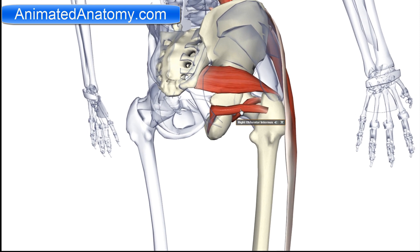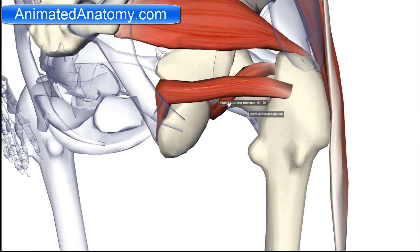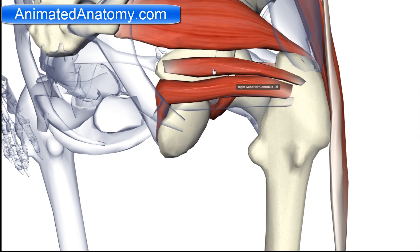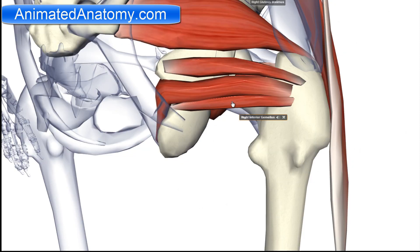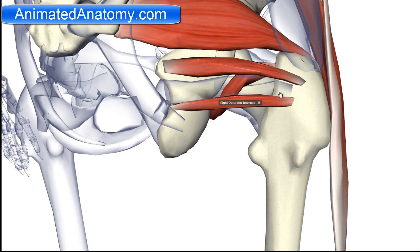Now we have two interesting muscles called the gemellus muscles — the superior gemellus and the inferior gemellus. The inferior gemellus has its origin on the ischial tuberosity, while the superior gemellus originates from the spine of the ischium. Both muscles share their insertion on the obturator internus tendon. They have the function of lateral rotation of the hip.